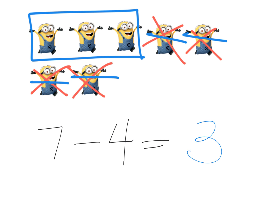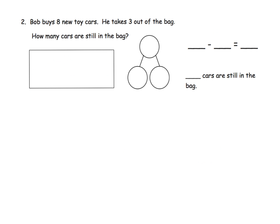And teachers, parents, this is the perfect time for you to connect the mathematics that we're supposed to be learning with the interests of your students. So that being said, we're going to do a bunch of contexts that may or may not be interesting to your students. So here we've got Bob. He buys 8 new toy cars. He takes 3 out of the bag. How many cars are still in the bag?